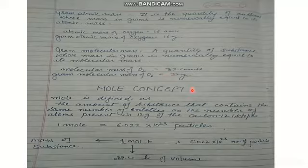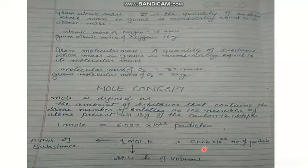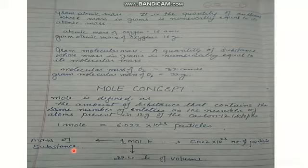The mole concept: a mole is defined as the amount of substance that contains the same number of entities as the number of atoms present in 12 grams of carbon-12 isotope. We know that 1 mole = 6.022 × 10²³ particles. Moles can be converted into number of particles, into volume in liters, or into mass of the substance. 1 mole = 6.022 × 10²³ particles = 22.4 liters of volume = the gram atomic or molecular mass.